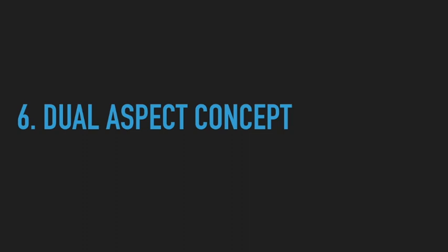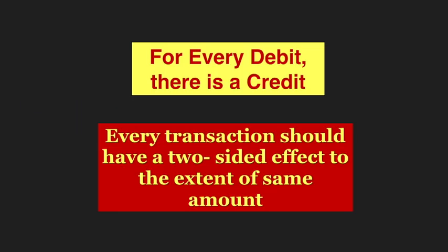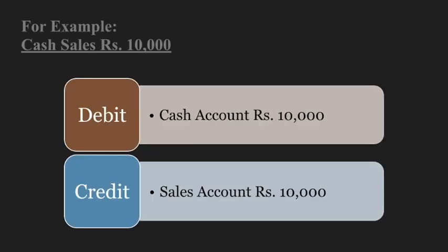The next concept is the dual aspect concept. Dual means two-sided. In accounting, two-sided means debit and credit. Every transaction should have a two-sided effect — a debit side and a credit side — and both sides must have equal amounts. For example, a cash sale of 10,000 means cash is debited 10,000 and sales is credited 10,000.